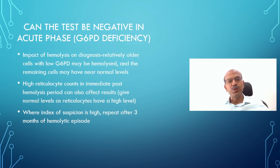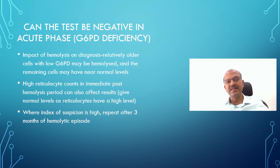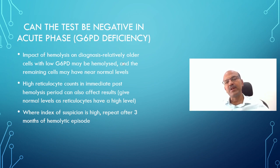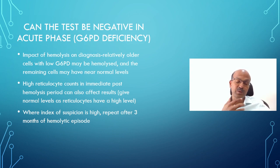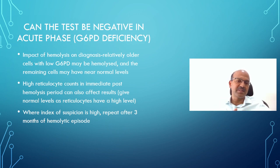Can the test be negative in the acute phase? Yes, for two reasons. First, the high reticulocyte count in the immediate post-hemolysis period — reticulocytes are younger RBCs with higher enzyme levels, so they may falsely give a normal reading. Second, in hemolytic conditions from chemical or food exposure, the relatively older RBCs with lower G6PD levels are the ones that hemolyze quickly, while the younger ones survive, so the level may look relatively normal. Therefore, where the index of suspicion is high, repeat the test after 3 months of the hemolytic episode.